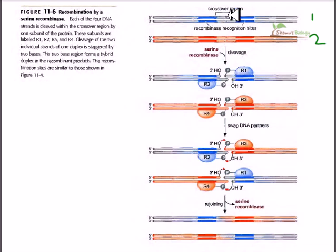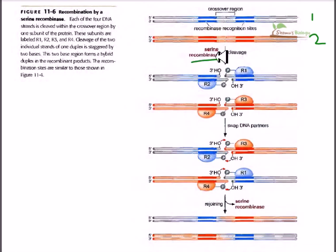There is a stretch of nucleotide sequences between the colored regions called the crossover region or crossover site. This crossover region is where the DNA will be cleaved and rejoined. The colored regions serve as recombinase recognition sites. The serine recombinases have multiple tasks — they can cut the DNA strand and reseal it using their hydroxyl group.